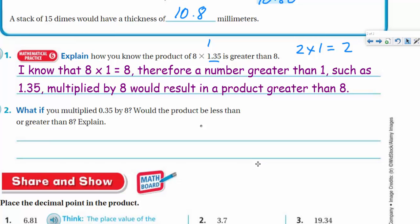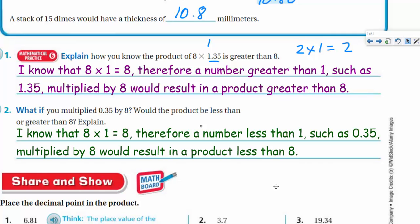All right. So, I'm going to go ahead and write those notes in right now. So, there you go. I know that 8 times 1 is 8. Therefore, a number greater than 1, such as 1.35, multiplied by 8 would result in a product that's greater than 8. All right. Number 2 says, what if you multiplied 35 hundredths by 8? Would the product be less than or greater than 8? And explain. Well, again, we can use the exact same reasoning as we did here. If 8 times 1 is 8, we already know that. Therefore, a number that's going to be less than 1, such as our number here, which is 35 hundredths, multiplied by 8 would result in a product that is less than 8.